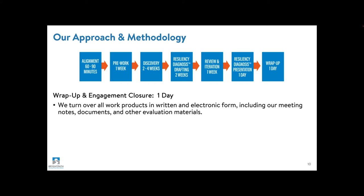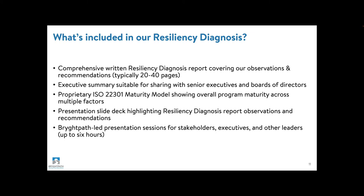So that's our approach and methodology. Let's talk about deliverables — what do you get? You receive a comprehensive written resiliency diagnosis report covering our factual observations and recommendations to improve your program. These reports typically range between 20 and 40 pages. We provide a brief executive summary suitable for senior executives and the board of directors, a proprietary ISO 22301 maturity model showing your overall program maturity across multiple factors, a presentation slide deck highlighting our observations and recommendations, and up to six hours of presentation sessions for your stakeholders, board, executives, and other leaders.